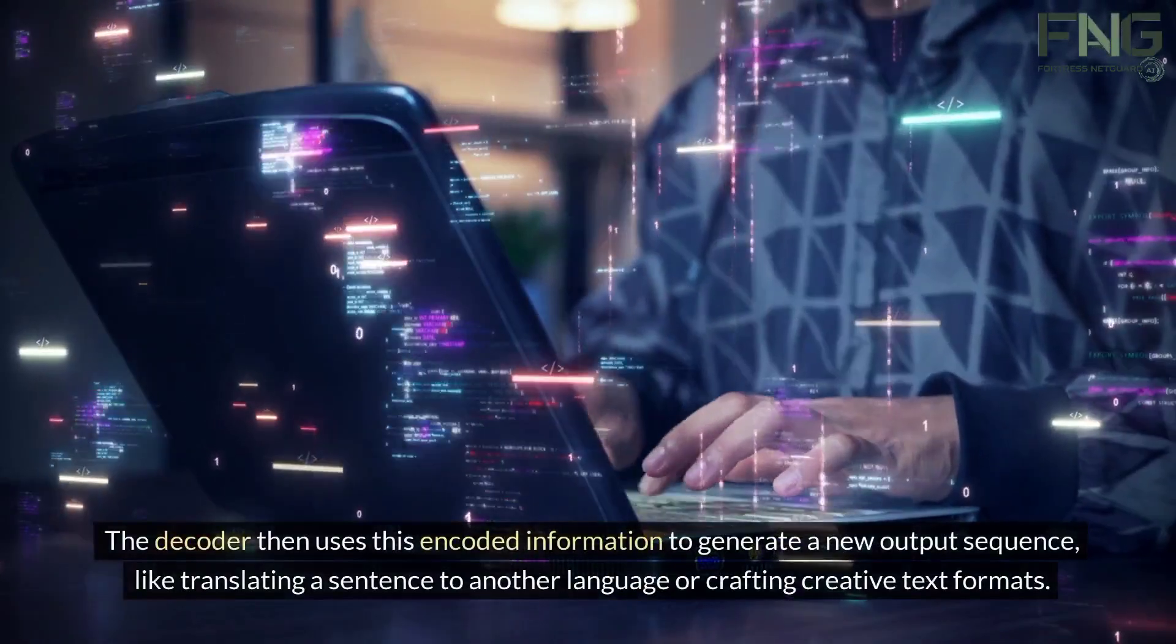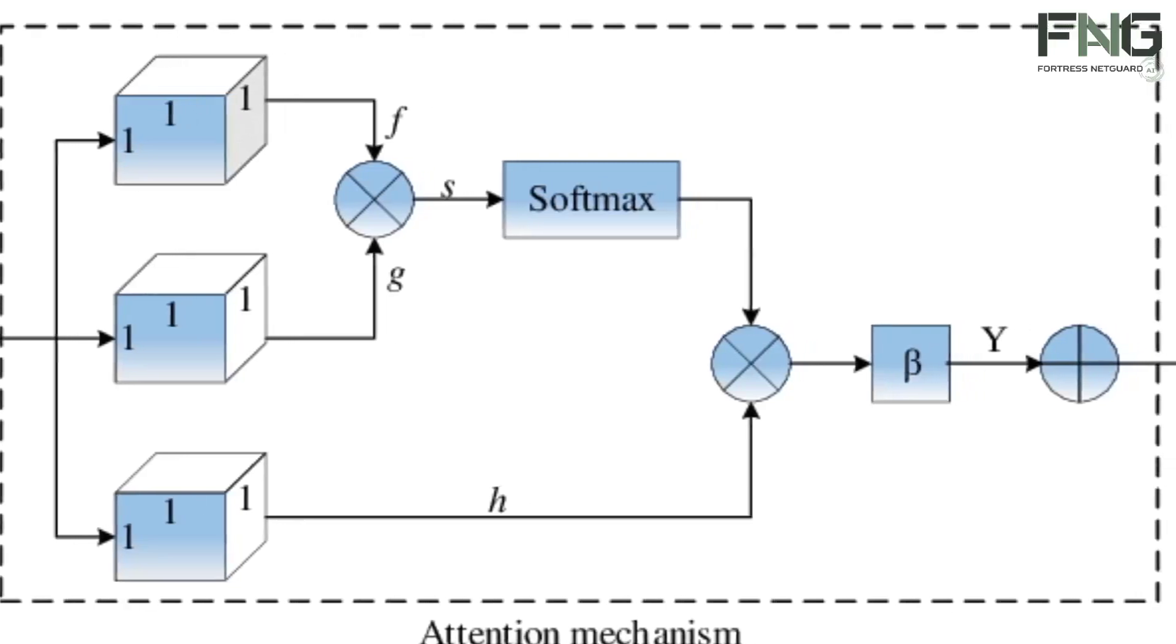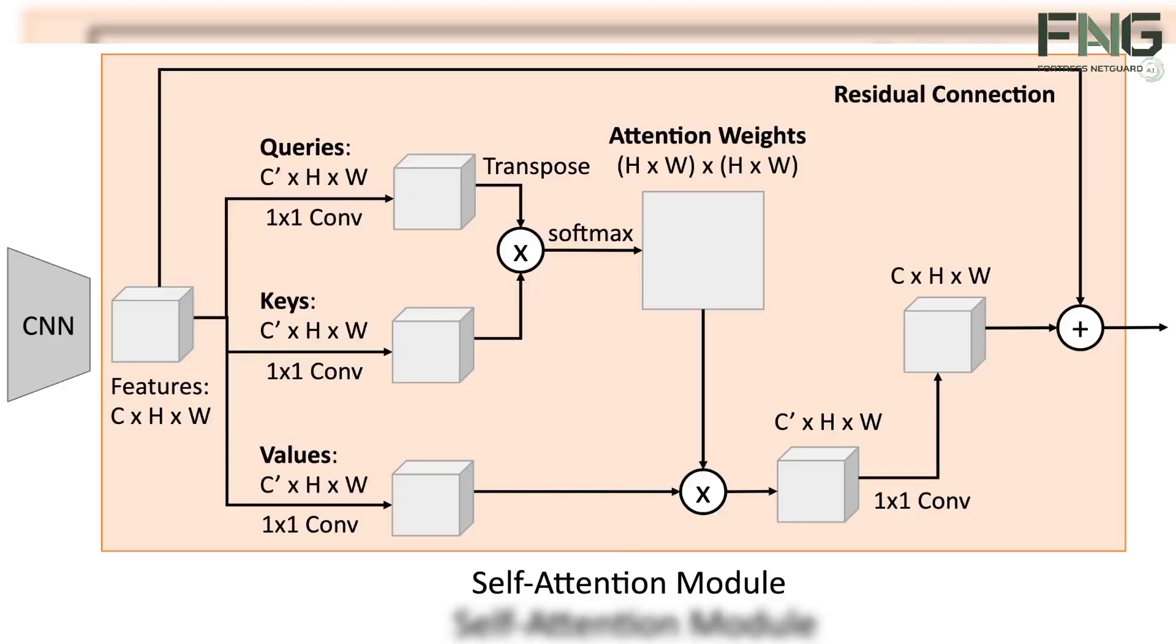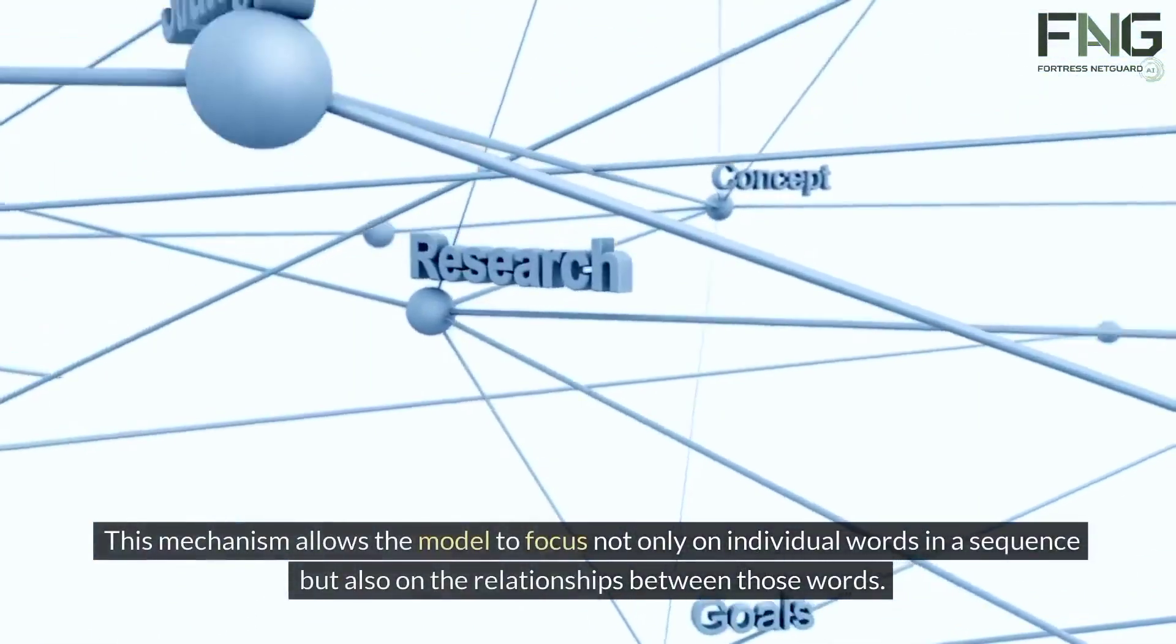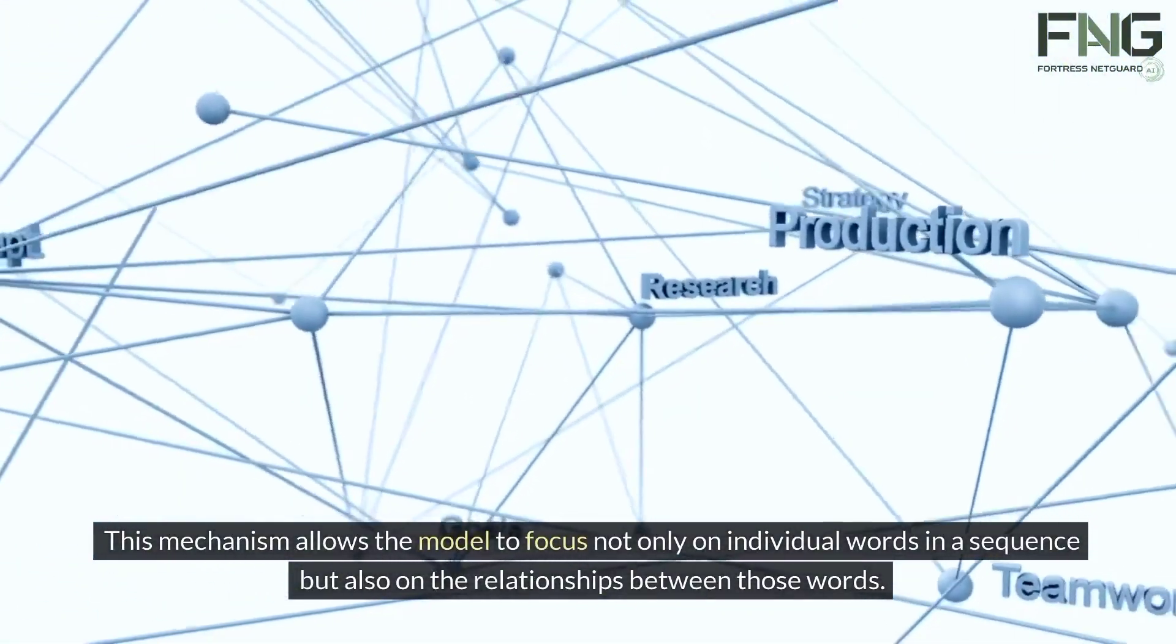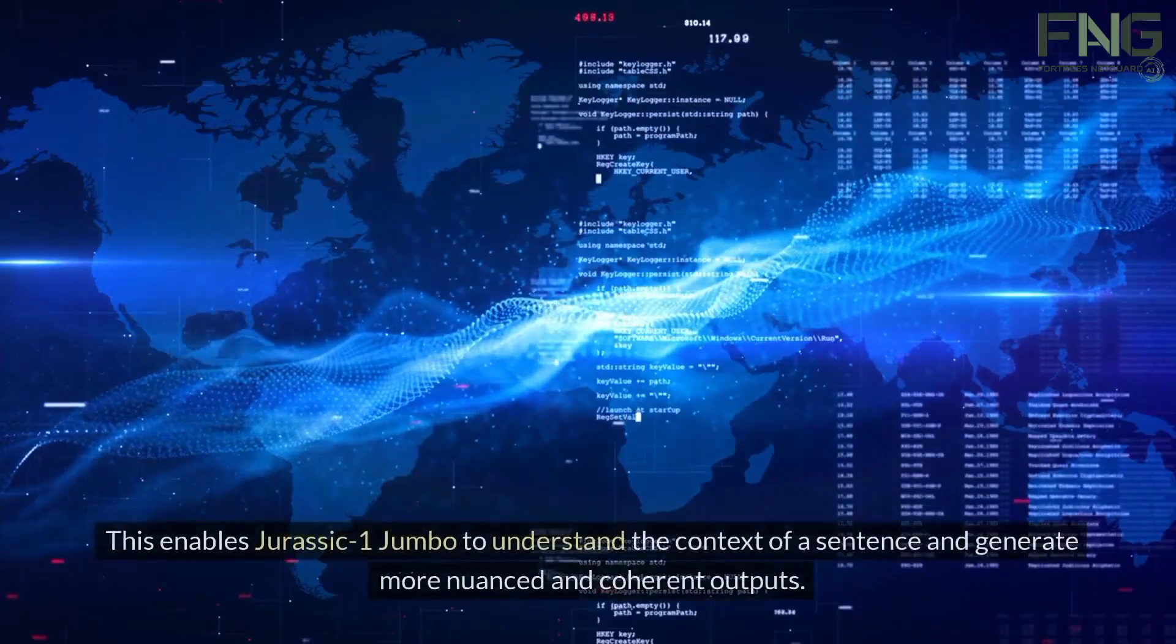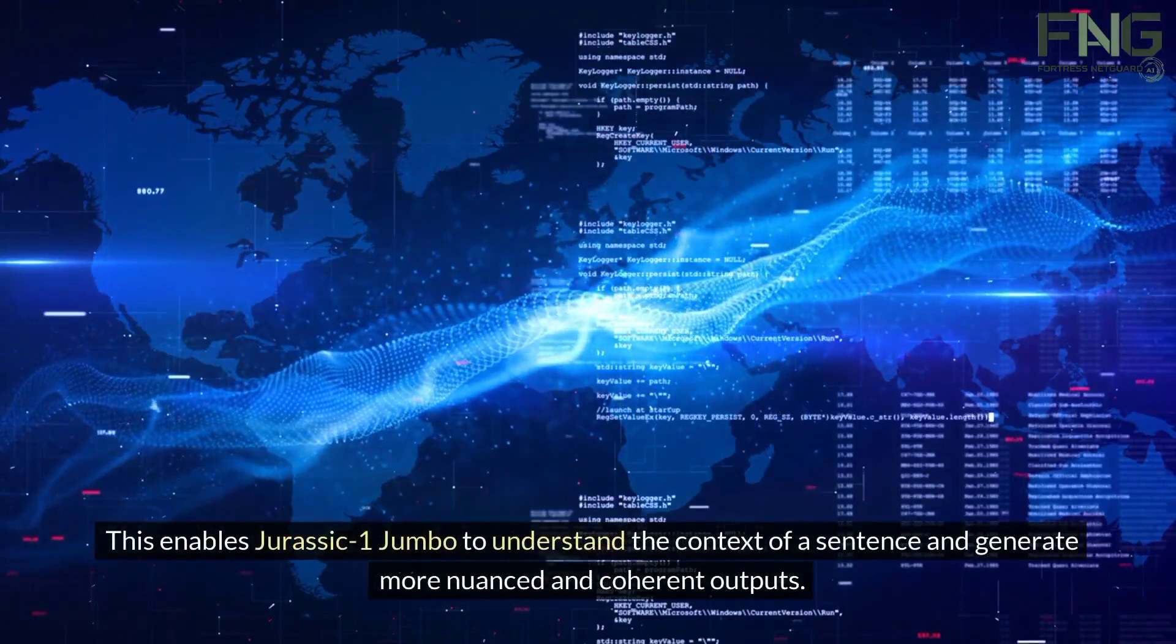One of the key strengths of the transformer architecture is the self-attention mechanism. This mechanism allows the model to focus not only on individual words in a sequence, but also on the relationships between those words. This enables Jurassic-1 Jumbo to understand the context of a sentence and generate more nuanced and coherent outputs.